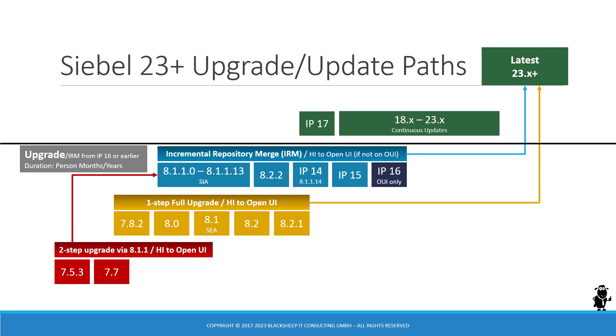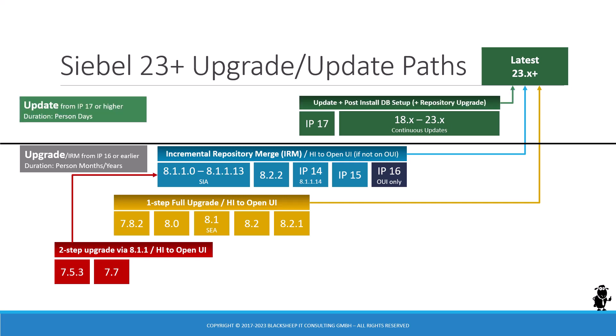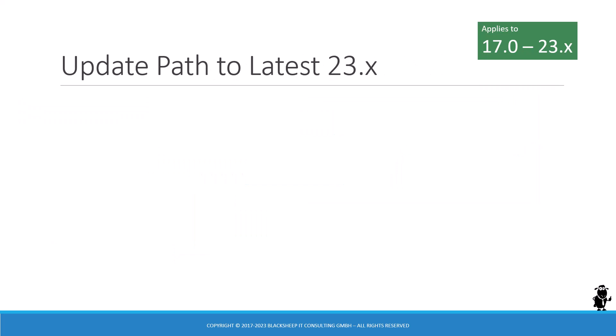If you are already on IP 17 or anything higher — including 18, 19, 20, and beyond — then we talk about updates. An update is measured in person days; it's just a matter of a few days to get your environment from that older version to the latest 23.x or higher. Let's dive a little bit into the update paths that we have.